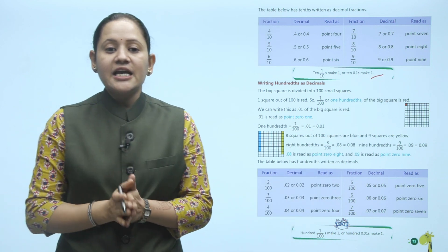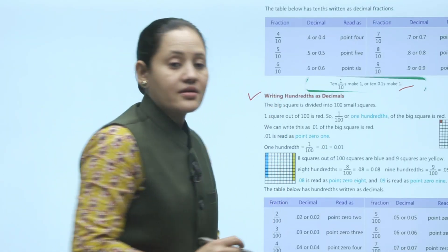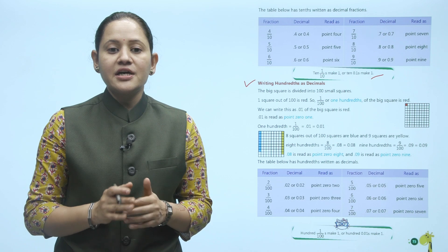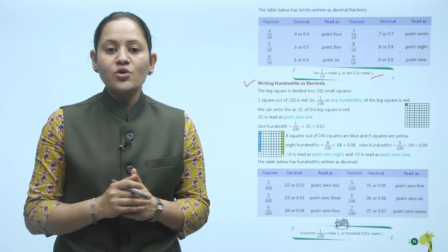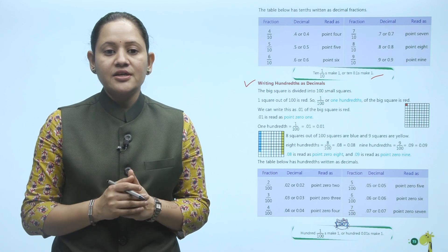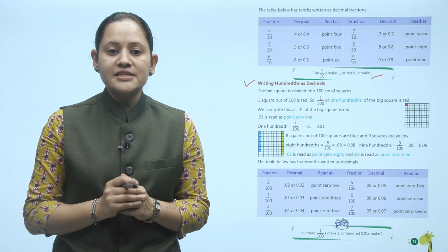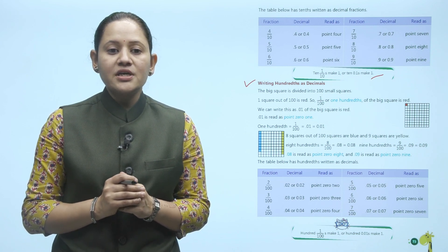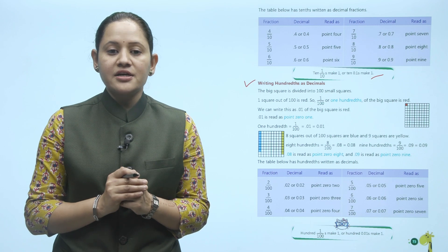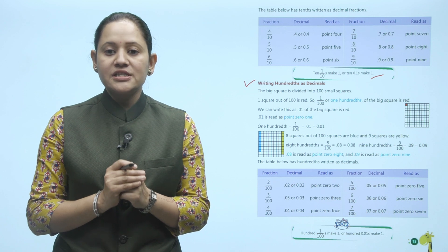Next is writing hundredths as decimals. The big square is divided into 100 small squares. One square out of 100 is red, so one upon hundred, or one hundredth of the big square, is red. We can write this as 0.01. 0.01 is read as 'point zero one.' One upon hundred equals 0.01.